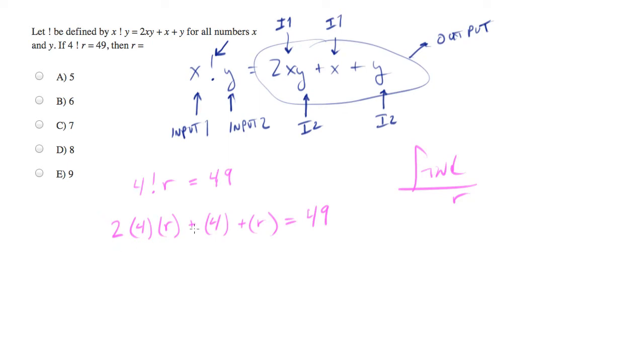Now, let's solve this equation for r. So we'll end up with 8r plus 4 plus r equals 49. Collect like variables, so we'll end up with 9r plus 4 equals 49. Let's subtract 4 from both sides, and we end up with 9r equals 45.